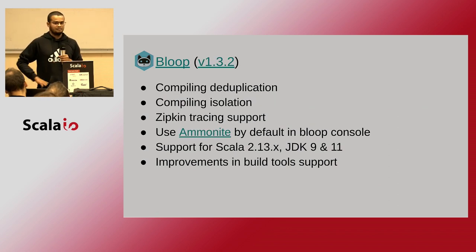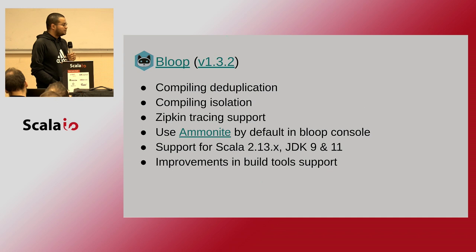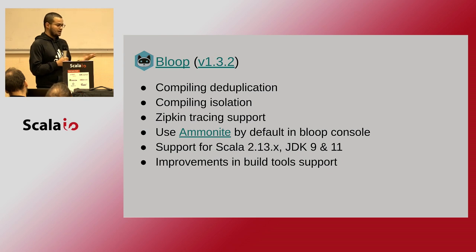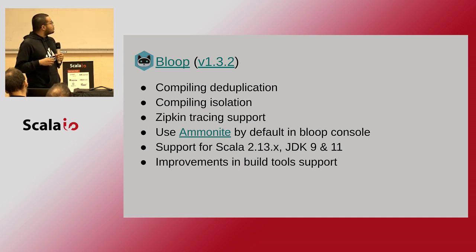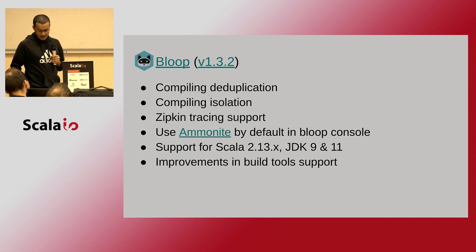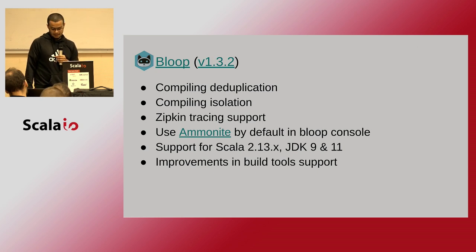In the latest version, Bloop can scale your build process using compile deduplication — when you're compiling in parallel from, say, the console and SBT simultaneously, the deduplicator compiles just one of those requests. Compile pipelining lets you compile on the same code base in parallel, requesting different compilation units at the same time. It also supports Ammonite, a REPL with very nice characteristics — in fact, the Ammonite-based REPL is built on this.